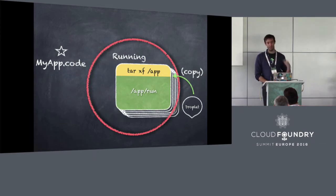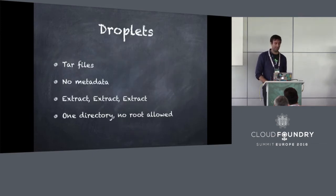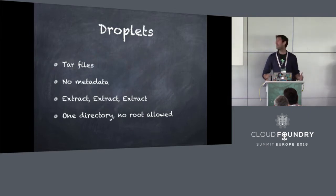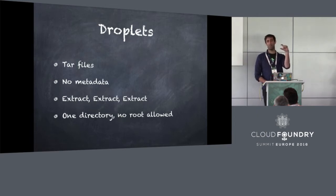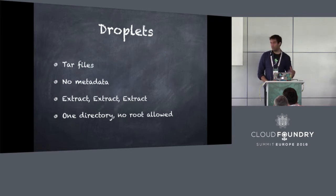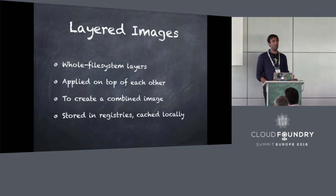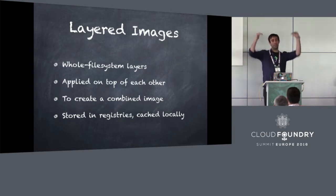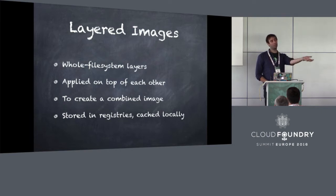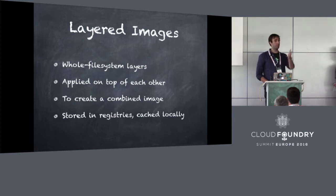What could we do instead? We could describe droplets: they're just tar files with no metadata. You extract them again and again in Cloud Foundry, which is actually why it sometimes takes quite a long time when you start your app - because we have to start the container, copy all the bits in, untar it, and then start things up. What would be better is layered images, which people may be familiar with from Docker. They've proved quite popular. They use whole file system layers, but diffs on top of each one to make that efficient.